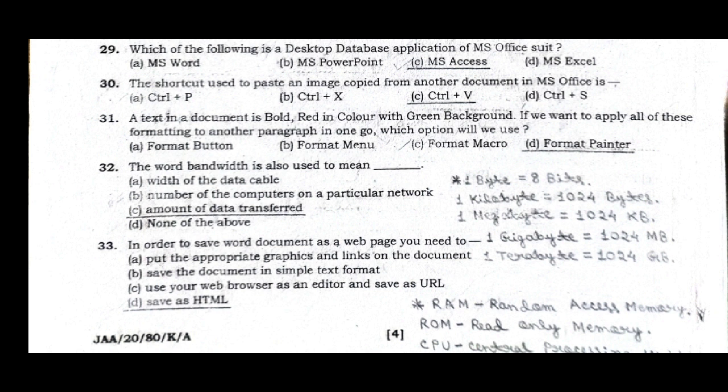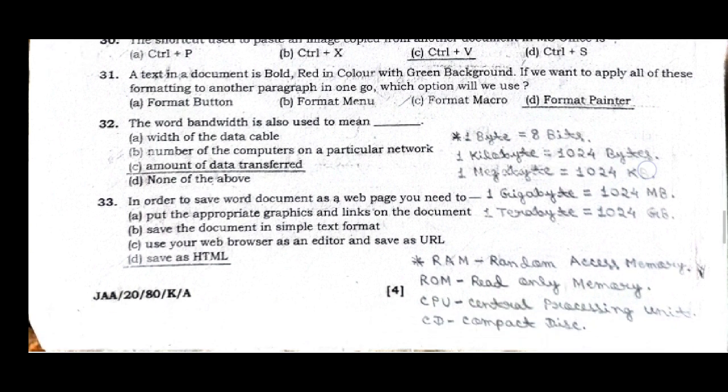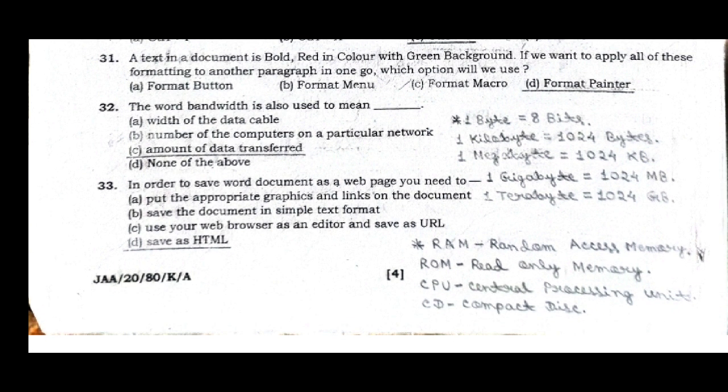For reference: one byte equals 8 bits; one kilobyte equals 1024 bytes; one megabyte equals 1024 KB; one gigabyte equals 1024 MB; one terabyte equals 1024 GB. Also: RAM stands for Random Access Memory; ROM stands for Read Only Memory; CPU stands for Central Processing Unit; CD stands for Compact Disk.